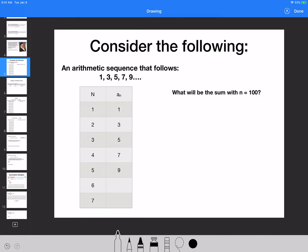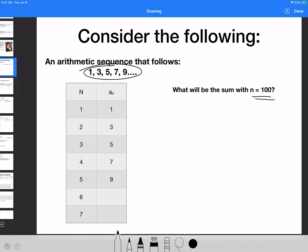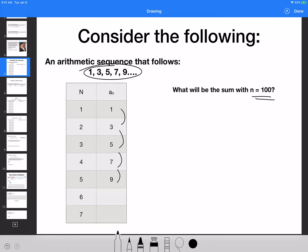Consider the following: Let's say I'm looking for the sum of 1, 3, 5, 7, 9, all the way down to n equals 100. On the table chart right here, we can figure out that the sequence involves adding 2, which is my common difference, and it's going to consistently add all the way down to n equals 100.